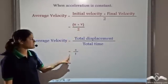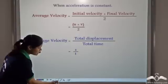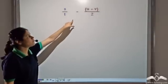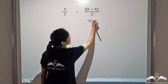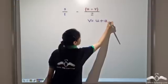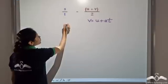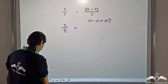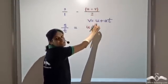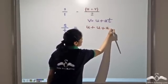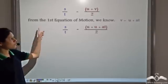We can equate these two expressions because both of them represent average velocity. So we get s by t is equal to u plus v by two. Now from the first equation of motion, we know that v is equal to u plus at. So let us substitute this in this equation.